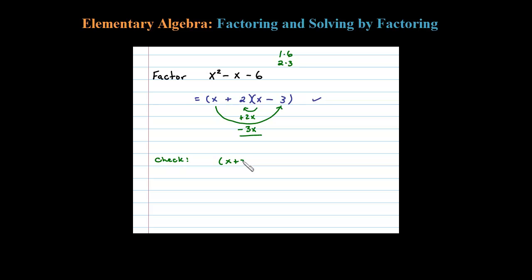If we multiply (x + 2) times (x - 3), that's what we think our answer is. We should get back to the original expression. x times x is x squared, x times negative 3 is minus 3x, 2 times x is plus 2x, and 2 times negative 3 is minus 6.